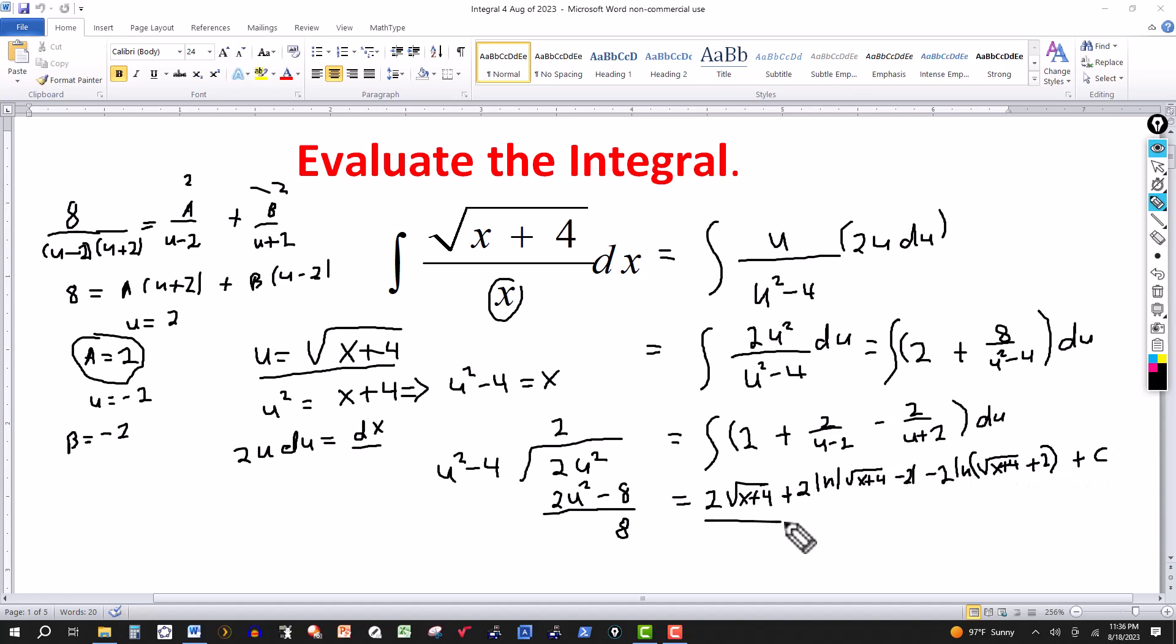So the final answer then is 2 square root of x plus 4 plus 2 natural log of absolute square root of x plus 4 minus 2, and then minus 2 natural log of the expression square root of x plus 4 plus 2, plus the constant of integration. I could put those two together, factor out the 2, and I have the natural log of this here over this over here, but I'm just going to leave it like that for now. That's your answer. Thanks for watching. See you next time.